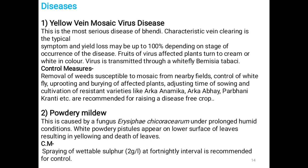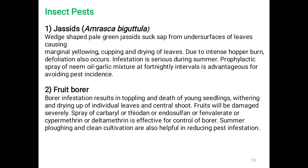Powdery mildew is caused by the fungus Erysiphe cichoracearum. Under prolonged humid conditions, white powdery pustules appear on the lower surface of leaves, resulting in yellowing and death of the leaves. Control measure: spraying of wettable sulfur at 2 grams per liter at fortnightly intervals is recommended.